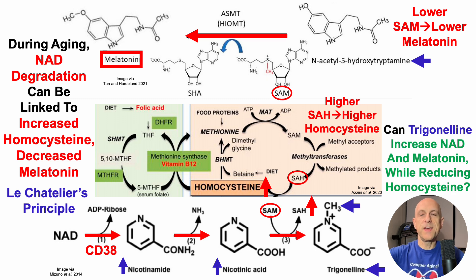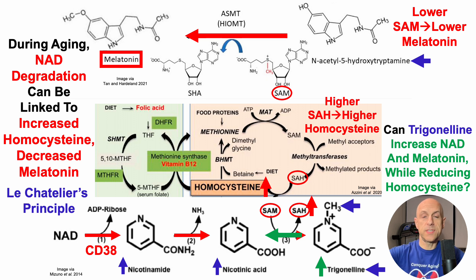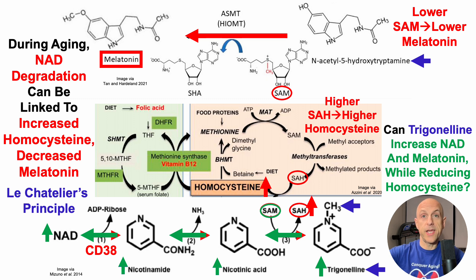With that in mind, if we specifically increase trigonelline, can we increase NAD and melatonin while reducing homocysteine? By Le Chatelier's principle, increasing trigonelline should shift the reaction toward products — in this case nicotinic acid — while consuming S-adenosyl homocysteine and producing S-adenosyl methionine. An increase in nicotinic acid will then be converted into nicotinamide, and the increase in nicotinamide will then be converted into NAD. So it's possible that an increase in trigonelline will lead to an increase in NAD.